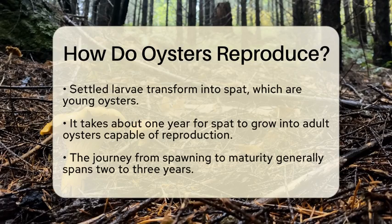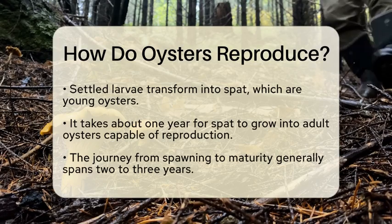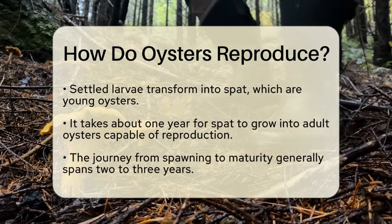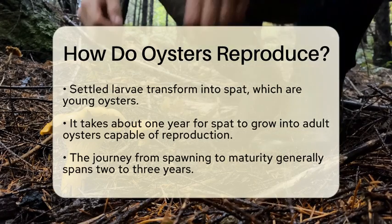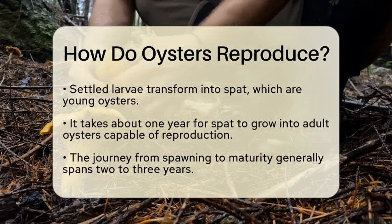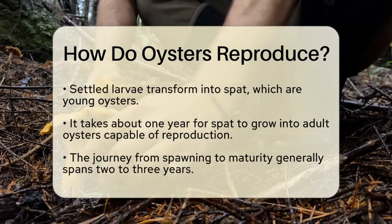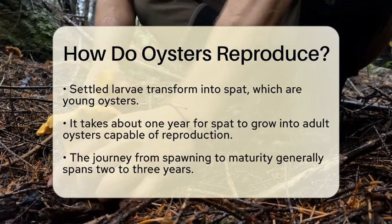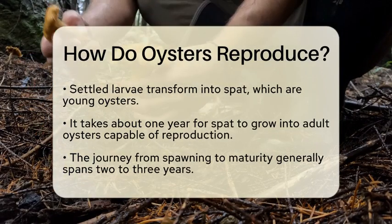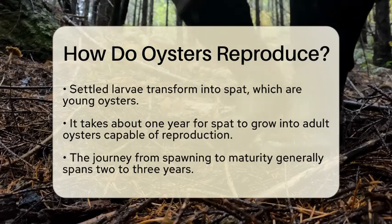Once they settle, they transform into what we call spat, which are young oysters. It takes about one year for spat to grow into adult oysters that can reproduce. The entire journey from spawning to maturity typically takes around two to three years.